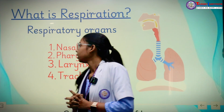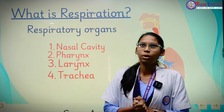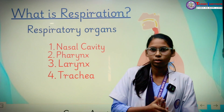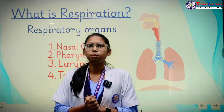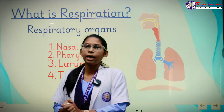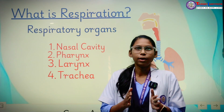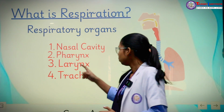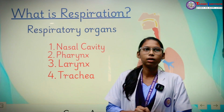Coming towards the pharynx: the pharynx is a pathway for both food and air. Food from the pharynx leads towards the esophagus and air leads from the pharynx to the larynx.